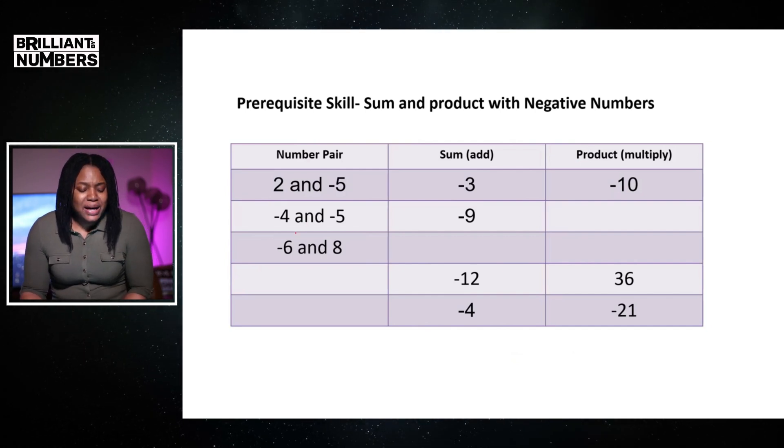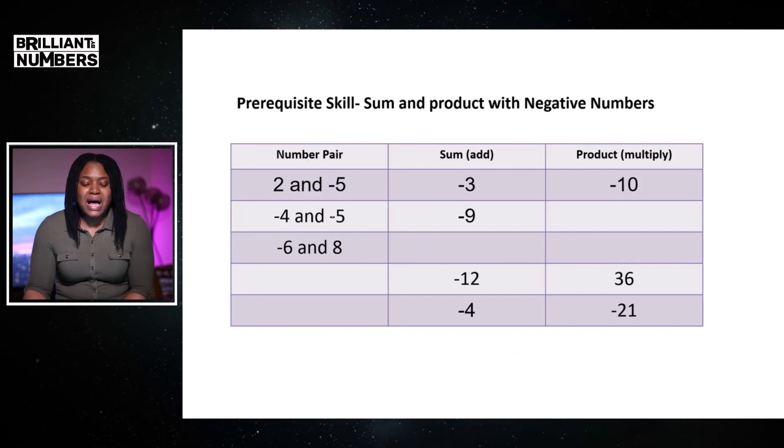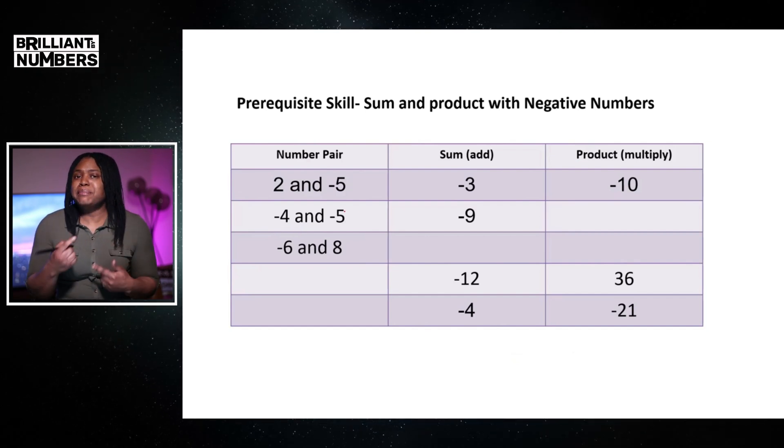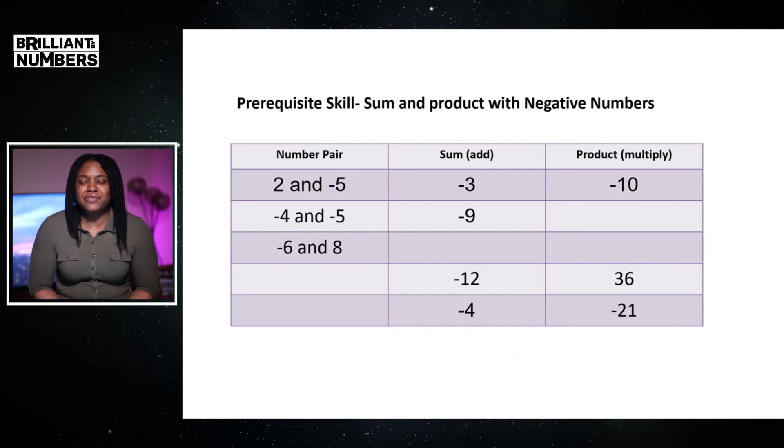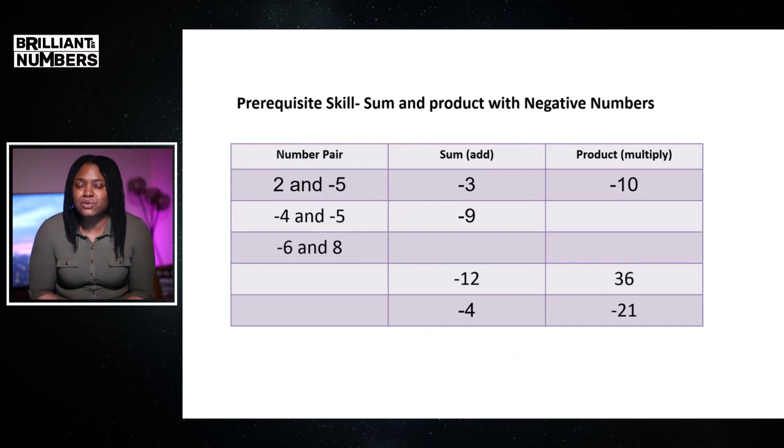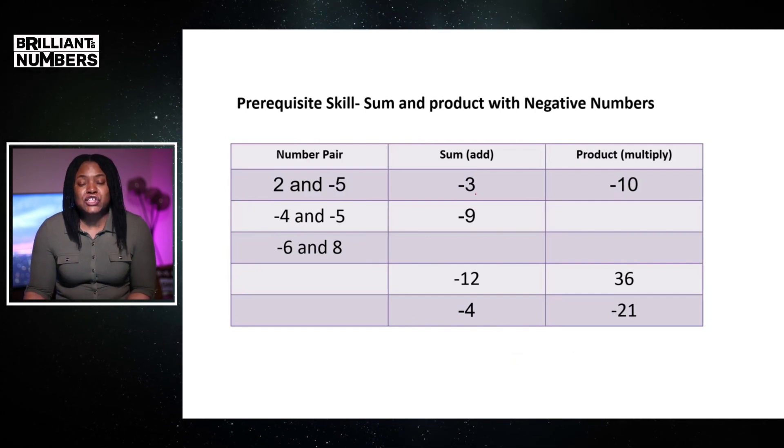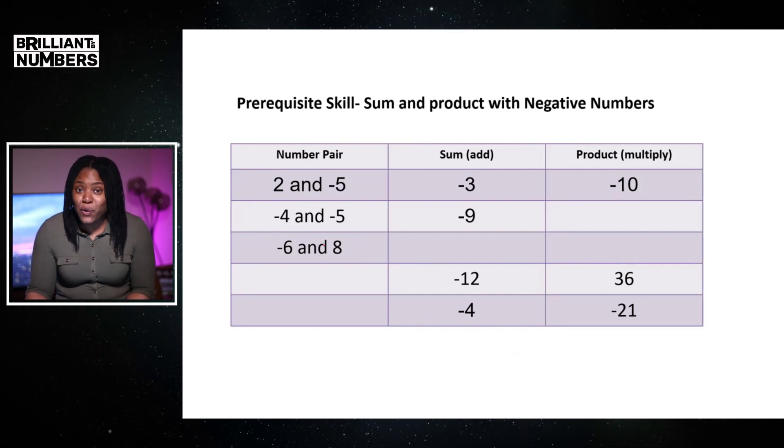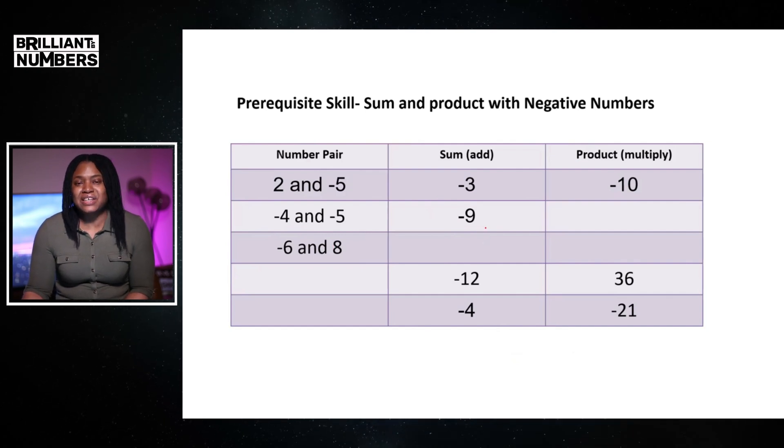In the next question here, I've got a number pair, minus 4 and minus 5. Going back to my explanation, looking at this as owing, I owe someone 4 pounds, and then I owe them an additional 5 pounds. Altogether, I will owe them 9 pounds. So, therefore, negative 4 and negative 5 added together will give us negative 9.